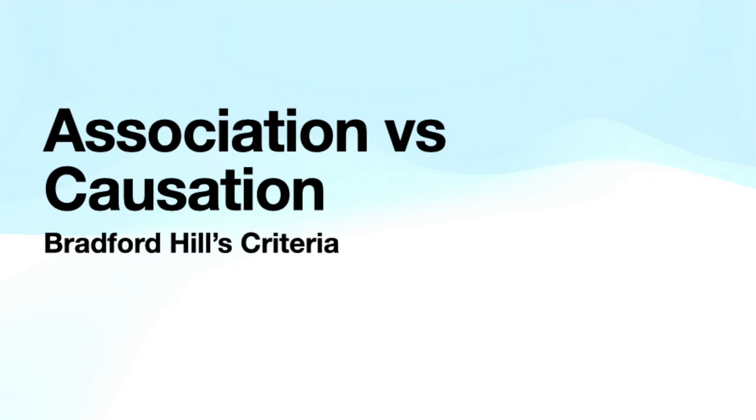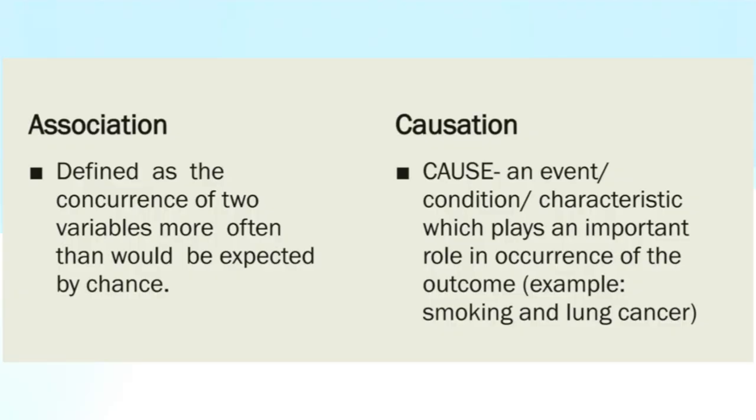In this video, we are going to discuss Hill's criteria for association and causation. As we all know, association is the concurrence of two factors more than expected by chance.